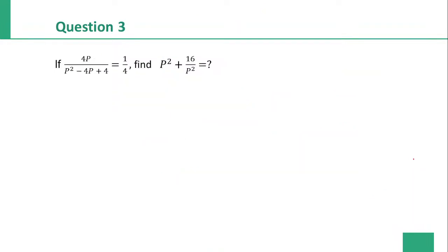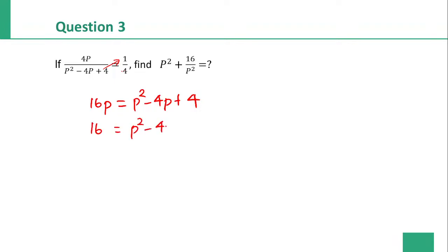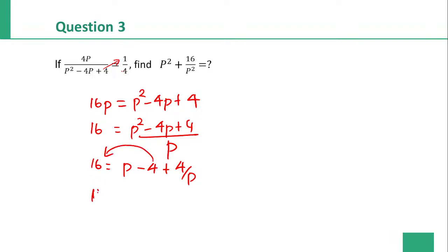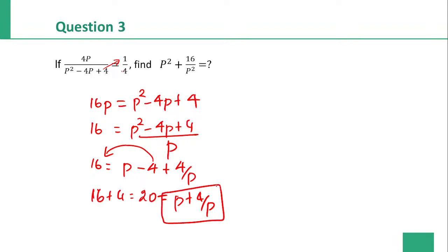Question number 3. Cross multiplying: 4p into 4 gives 16p, equal to p squared minus 4p plus 4. Dividing by p, we get 16 equals p minus 4 plus 4 by p. Moving minus 4 to the other side gives plus 4, so 16 plus 4 equals 20. Therefore p plus 4 by p equals 20. Using the shortcut: the coefficient of p is minus 4, so opposite sign is plus 4, giving 16 plus 4 equals 20.